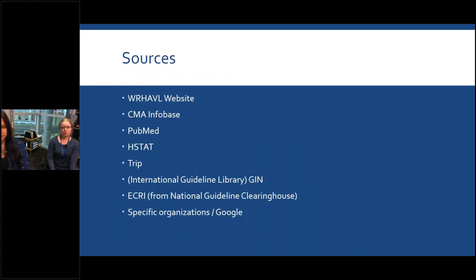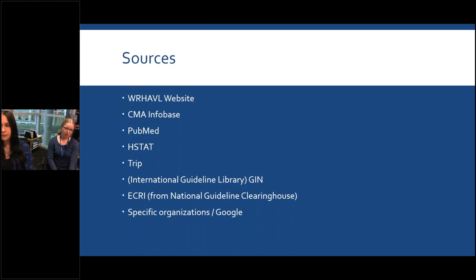The sources we'll be going over today include the WHA Virtual Library website, CMA Infobase, PubMed, HSTAT, the TRIP database, the International Guideline Library from Guidelines International Network, the ECRI Guidelines Trust — which used to be the National Guideline Clearinghouse — and also techniques for finding guidelines from specific organizations using Google.